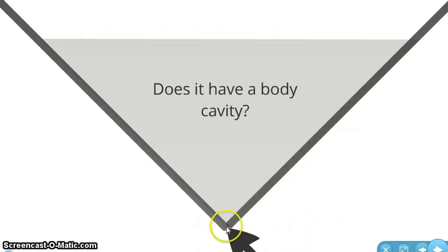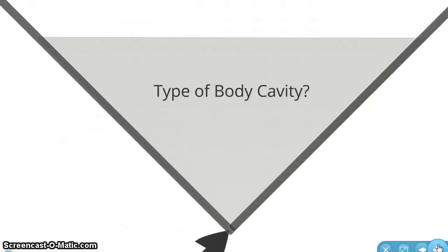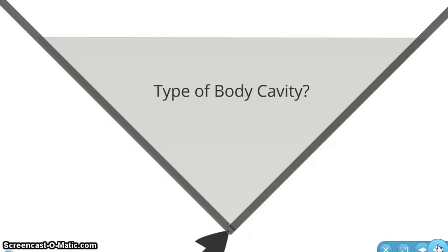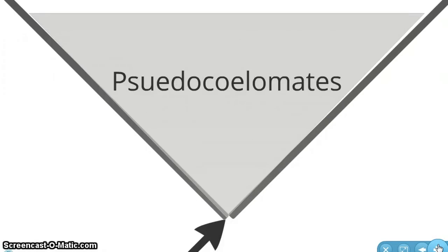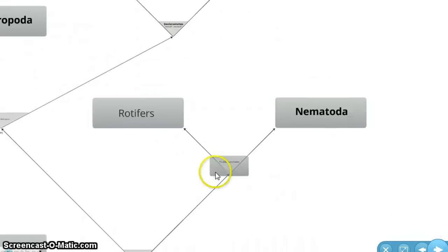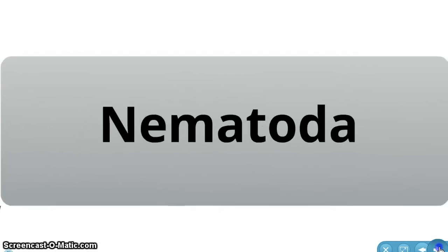After flatworms, which had no body cavity, we returned to the question: does it have a body cavity? If the answer is yes, we come to another question: what is the type of body cavity it has? If it is a pseudocoelomate, which means it has a fake body cavity — not a real one, just between two germ layers filled with liquid, not connected to the mesoderm — we come to two different phylums, Rotifera and Nematoda. Today we are just going to be looking at phylum Nematoda.